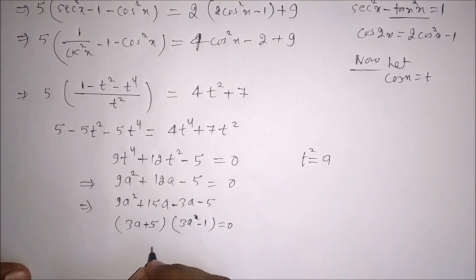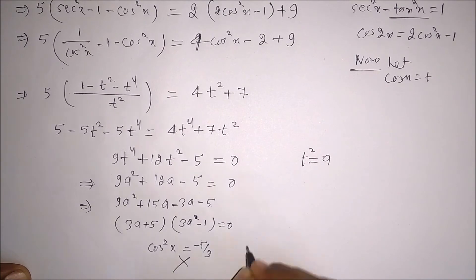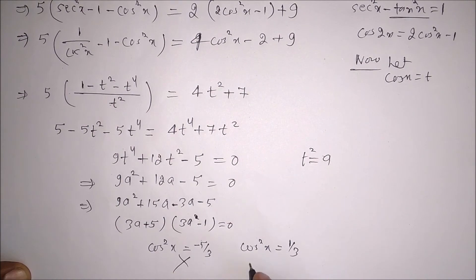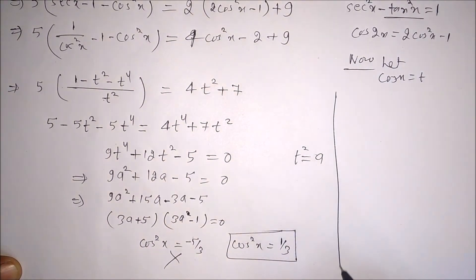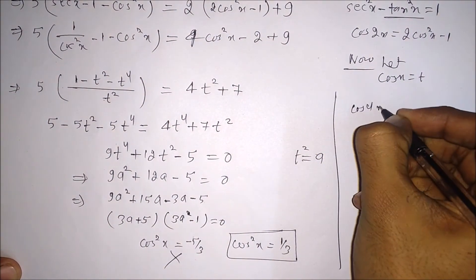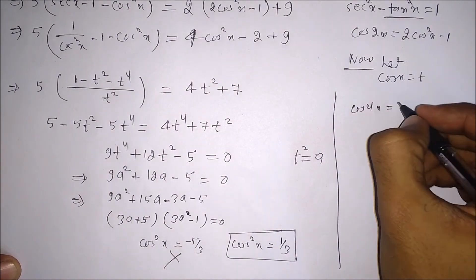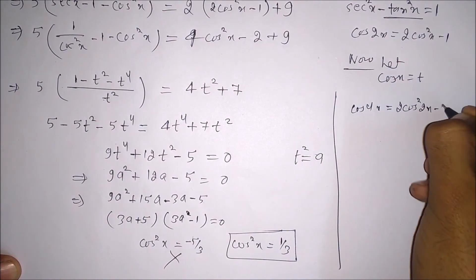Since a = t² = cos²x, cos²x cannot be negative, so cos²x = -5/3 is rejected. Therefore cos²x = 1/3. Now we want to find cos4x, which can be written as 2cos²(2x) - 1.